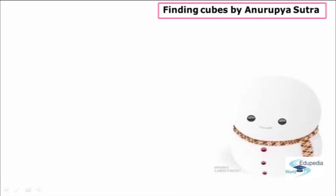And now, in this session, we are going to have a look at one more example regarding the same concept — finding the cubes of a given two-digit number by using Anurupyana Sutra. So let us see what that example is. The example that I am going to take in this session is: find the cube of 82.